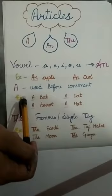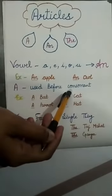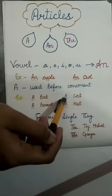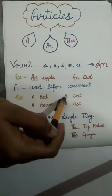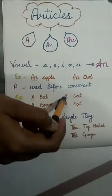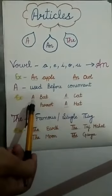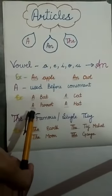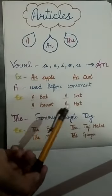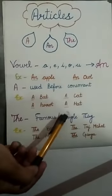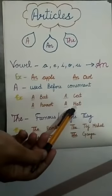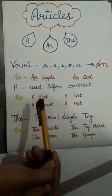A is used before consonant. A is used when we have one thing. And before consonant. Like a bat, a parrot, a cat, a hat. Also used before all the consonants like this.